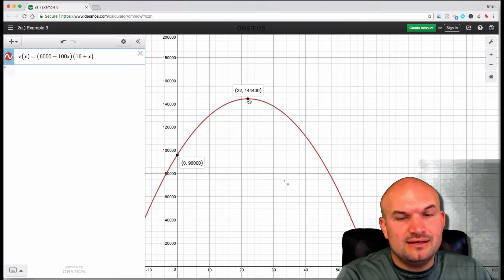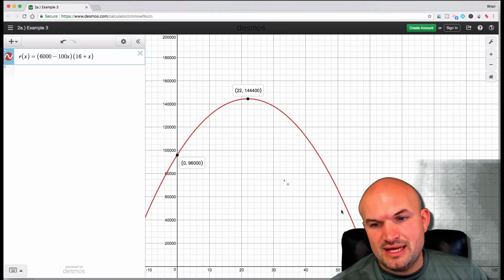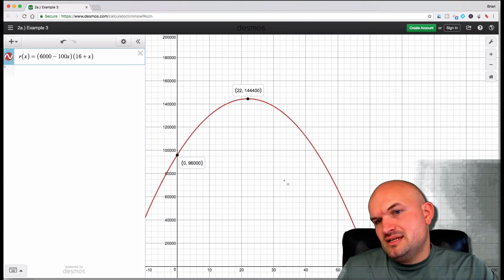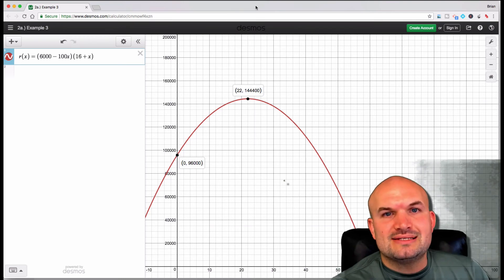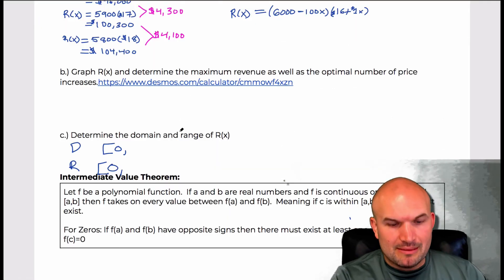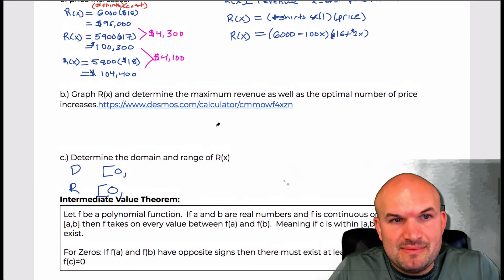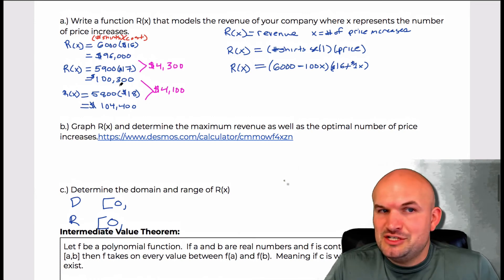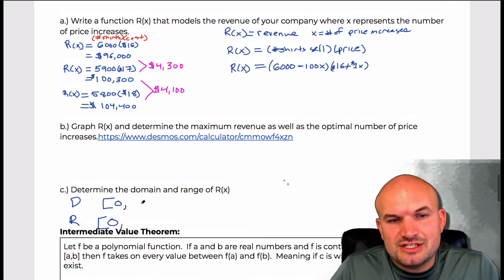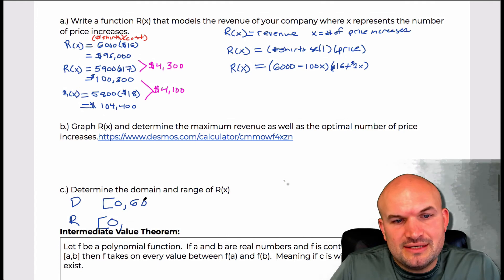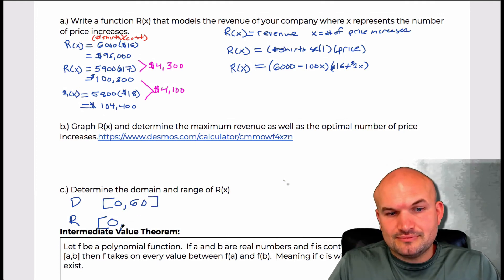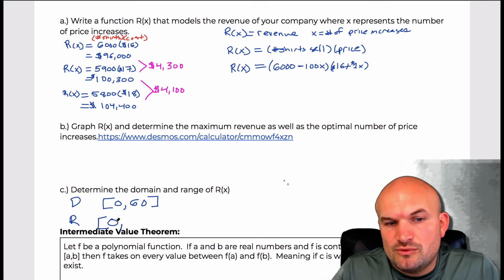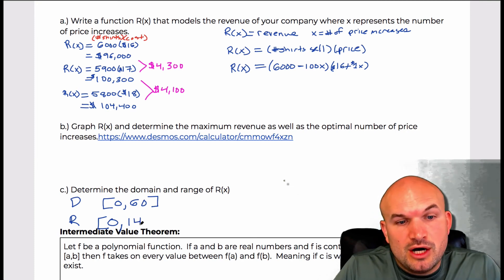Notice how after the maximum the revenue continues to drop. What it says is: if you do 60 price changes, you're going to not make any money. Why? Think about it — 60 times 100 is 6,000, so you've lost all your customers. So the domain is going to be 0 to 60, and the range is from 0 to $144,400, because the graph is bounded and doesn't go any higher.